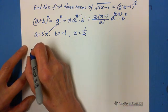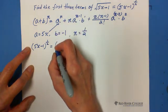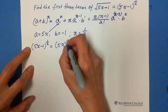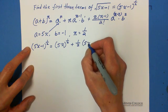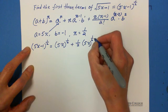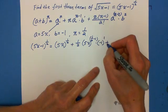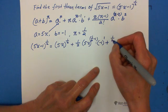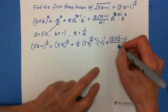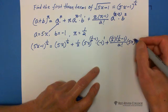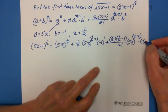So we have (5x minus 1) to the 1 over 2, equals a which is 5x to the n exponent — which is 1 over 2 — plus 1 over 2 times 5x to the (1 over 2 minus 1), and b is negative 1 to the 1 exponent. Then plus the third term: n is 1 over 2, multiply (1 over 2 minus 1), over 2 factorial, then 5x to the (1 over 2 minus 2), then b which is negative 1, squared.